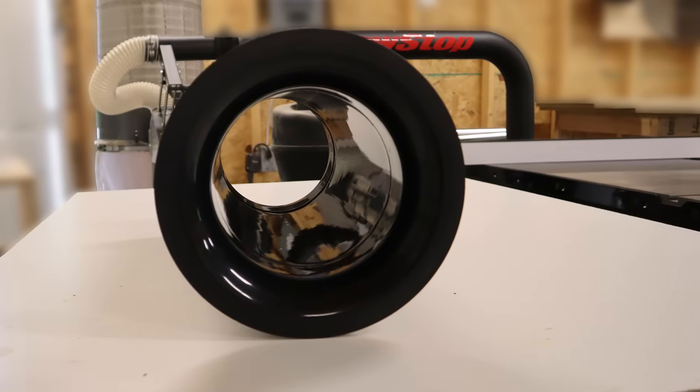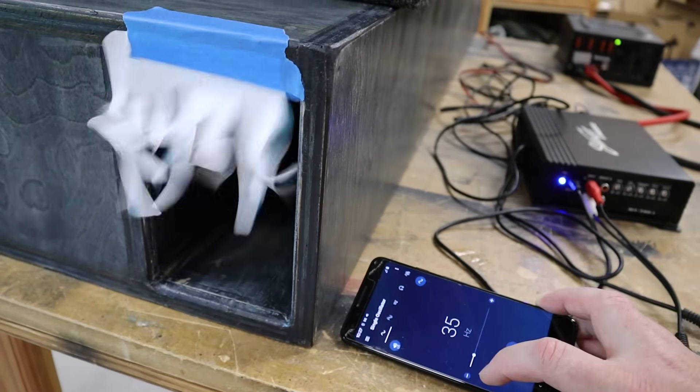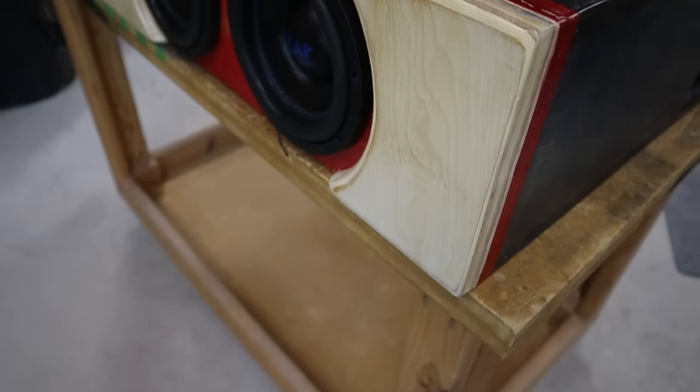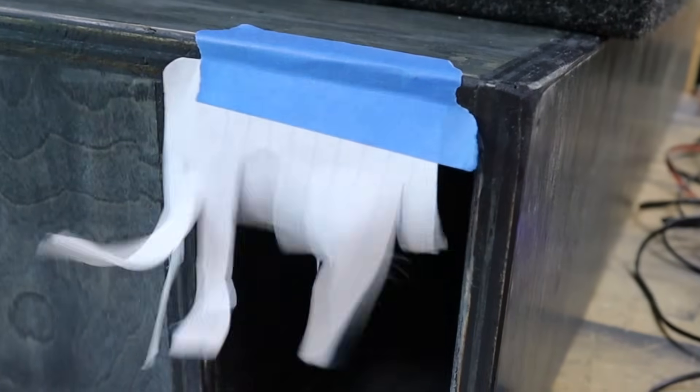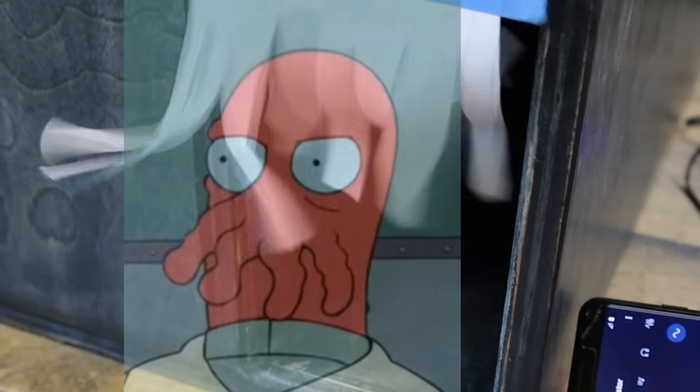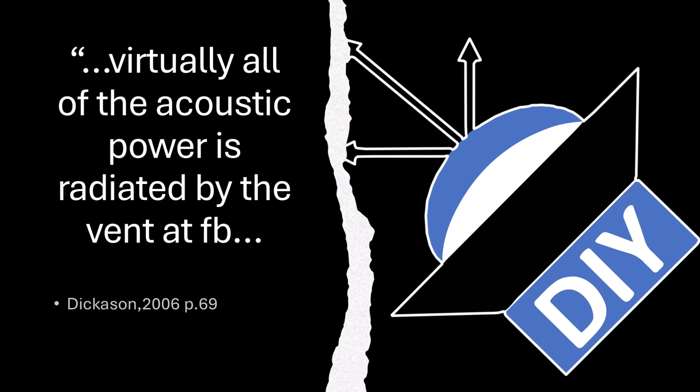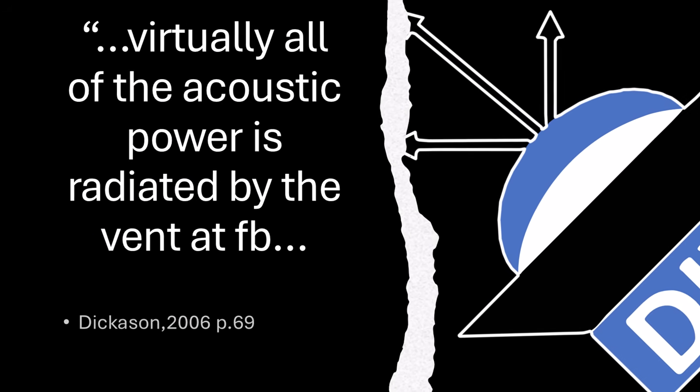At the tuning frequency, the majority of the sound is produced by the air in the port and the subwoofers themselves will barely move. You can put your hand over the port and you'll feel air moving in and out. It seems counterintuitive — you'd think that when the subwoofers are moving a lot you'd get more air moving through the port, but that's how it works. That is how it works according to Vance Dickinson, who wrote the Loudspeaker Design Cookbook. He said that virtually all of the acoustic power is radiated by the vent at the tuning frequency. The word vent and the word port mean the same thing.